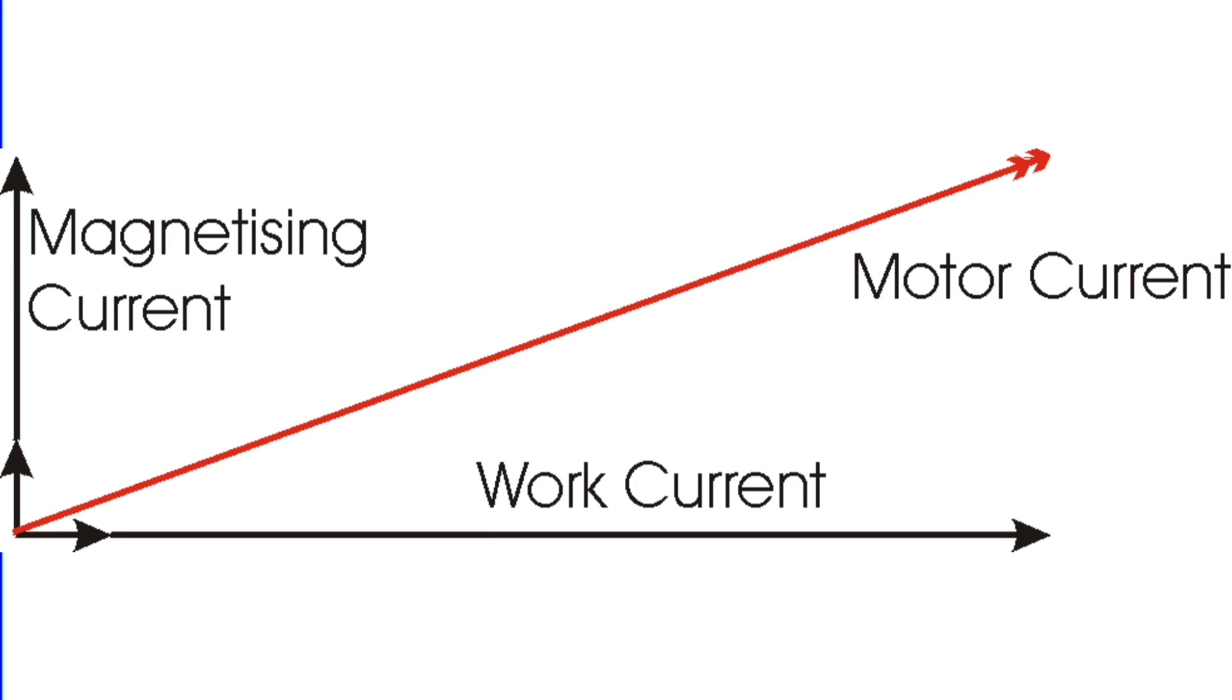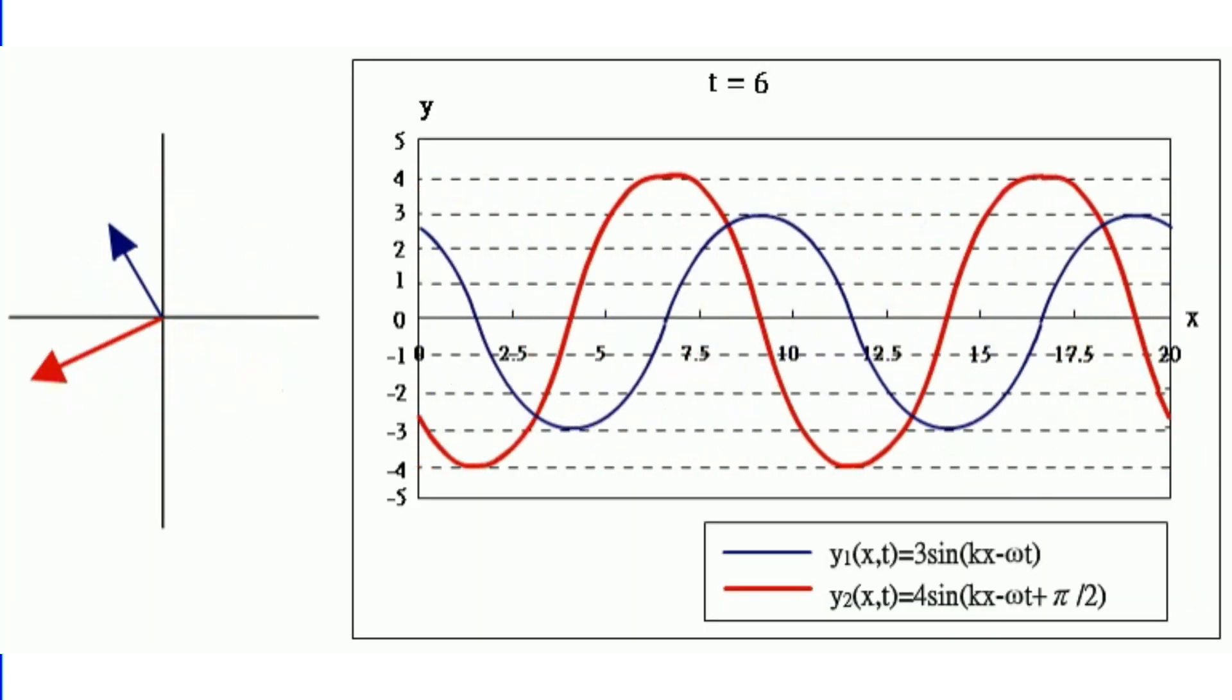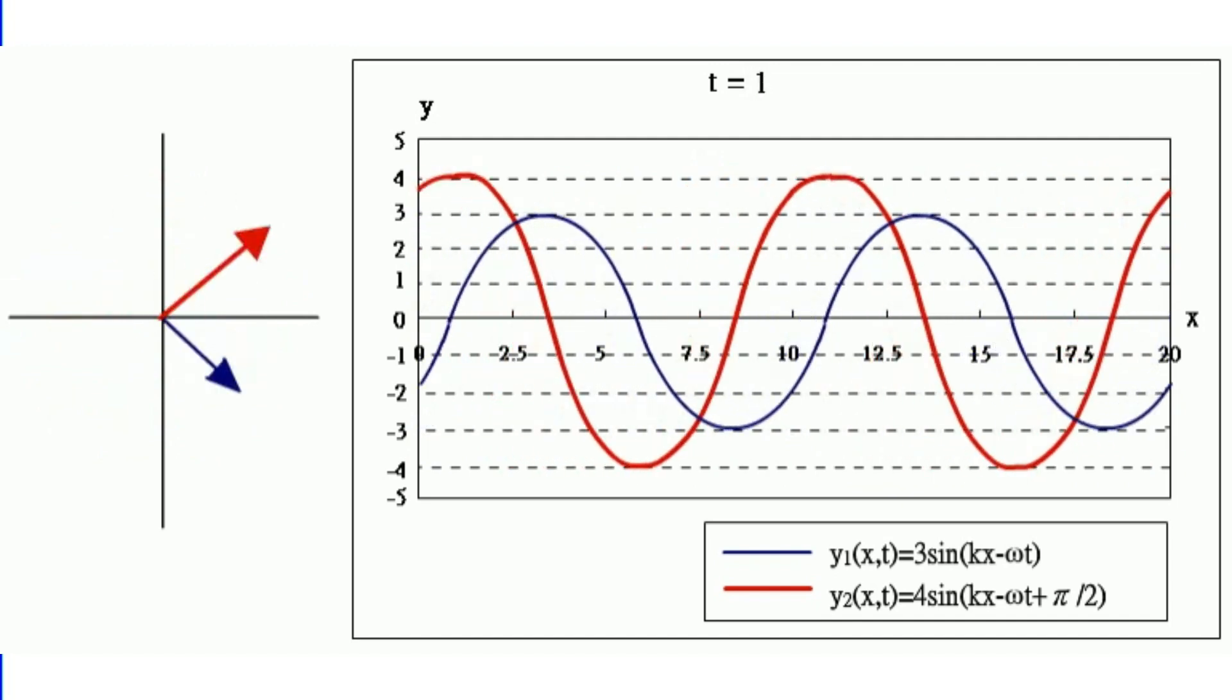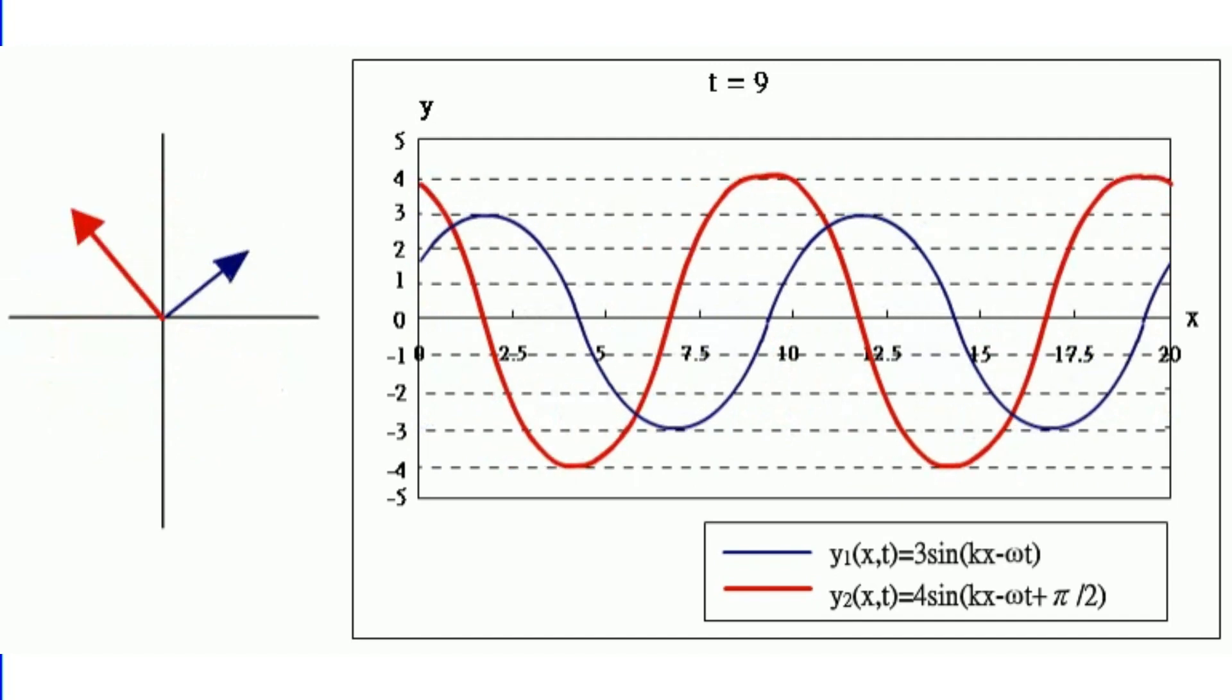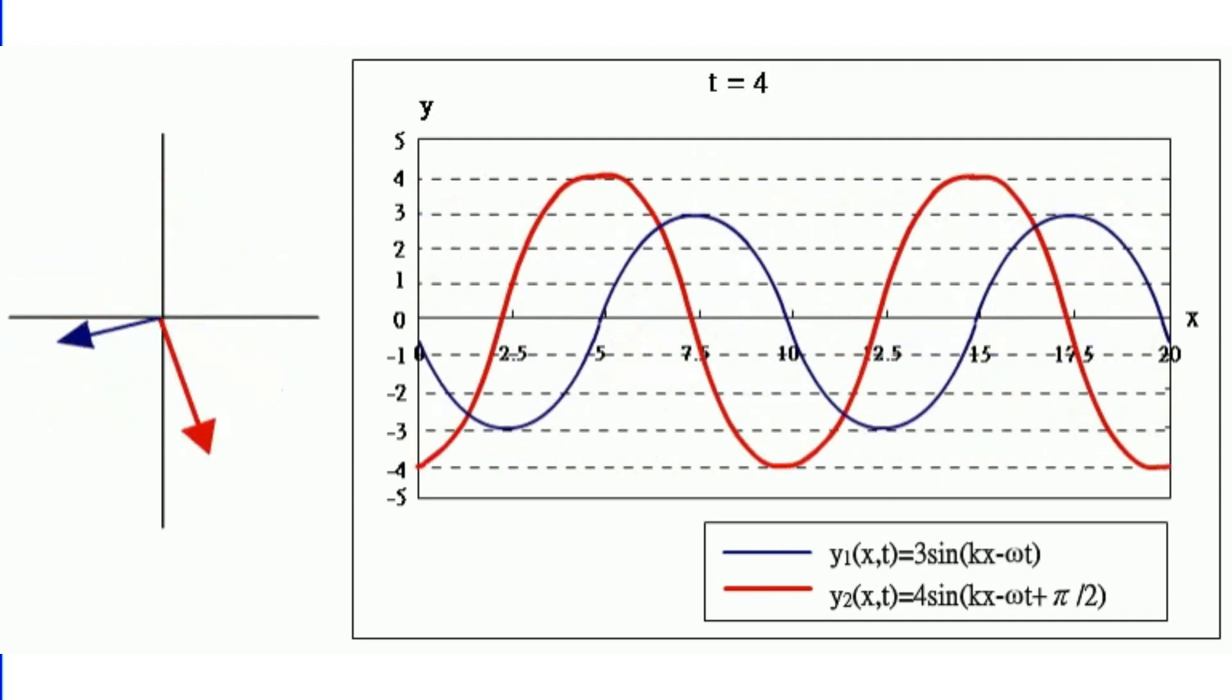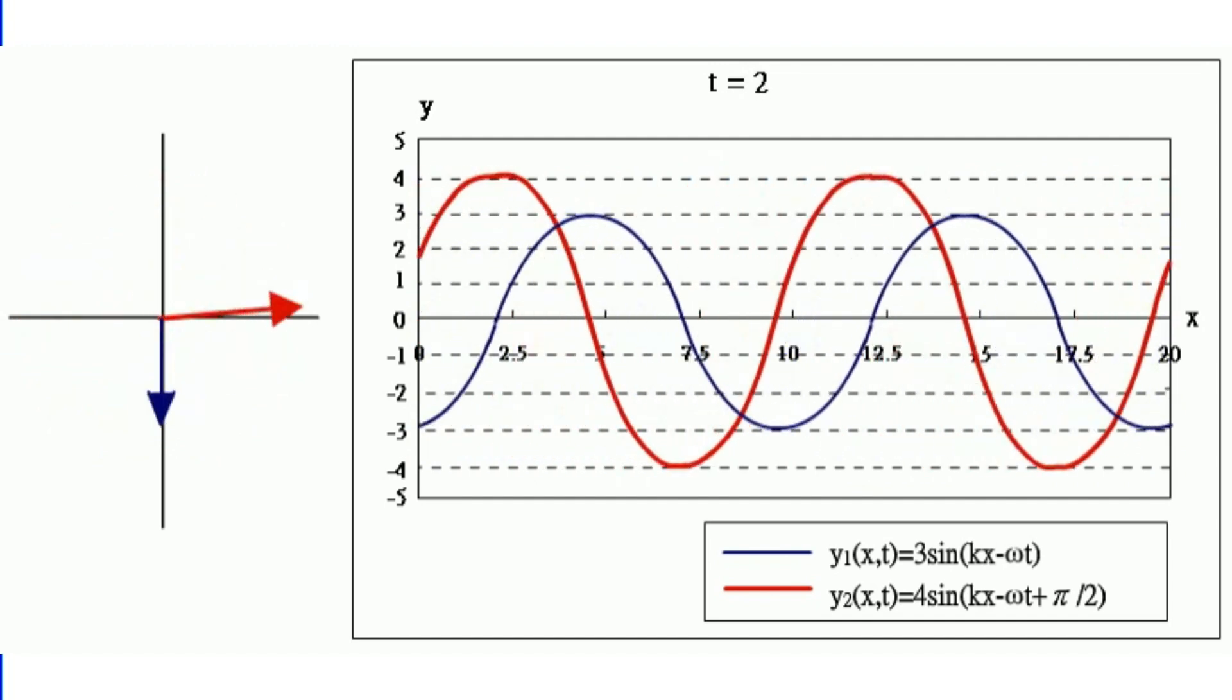This current is out of phase with the voltage, which means it doesn't peak at the same time as the voltage. It's like a slow friend who always lags behind. This lagging magnetizing current means some of the total current drawn by the motor isn't contributing to the actual work.